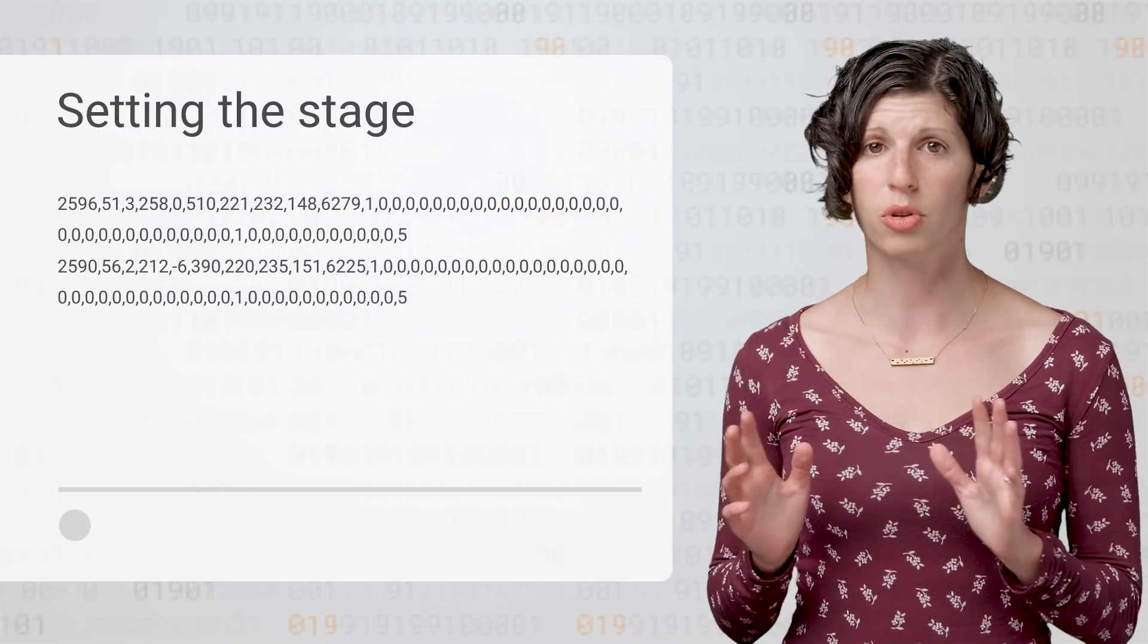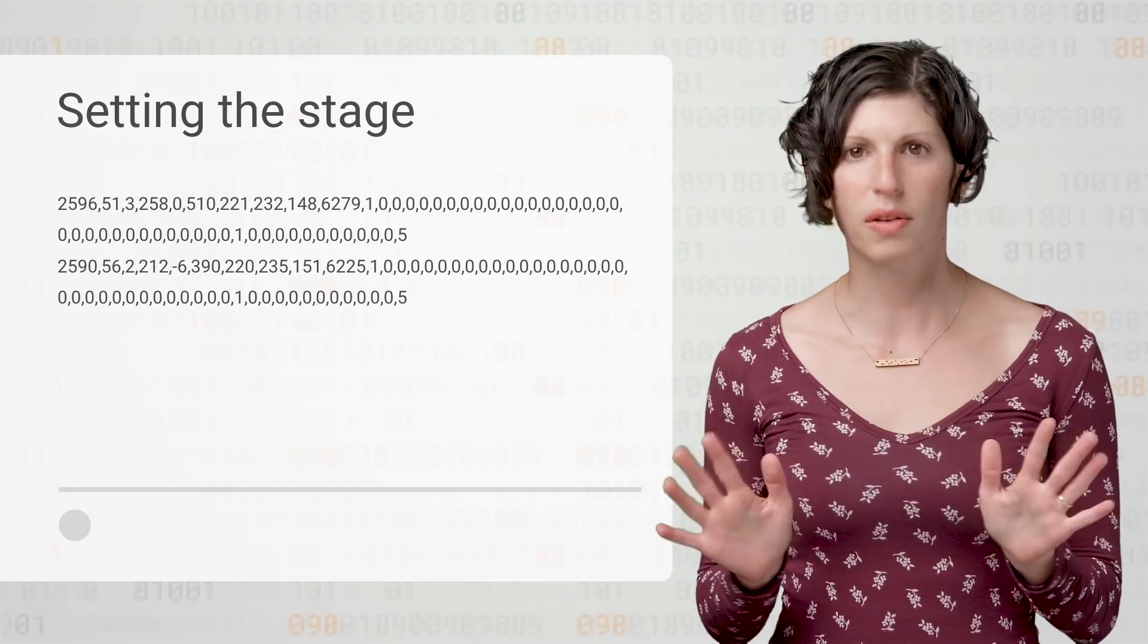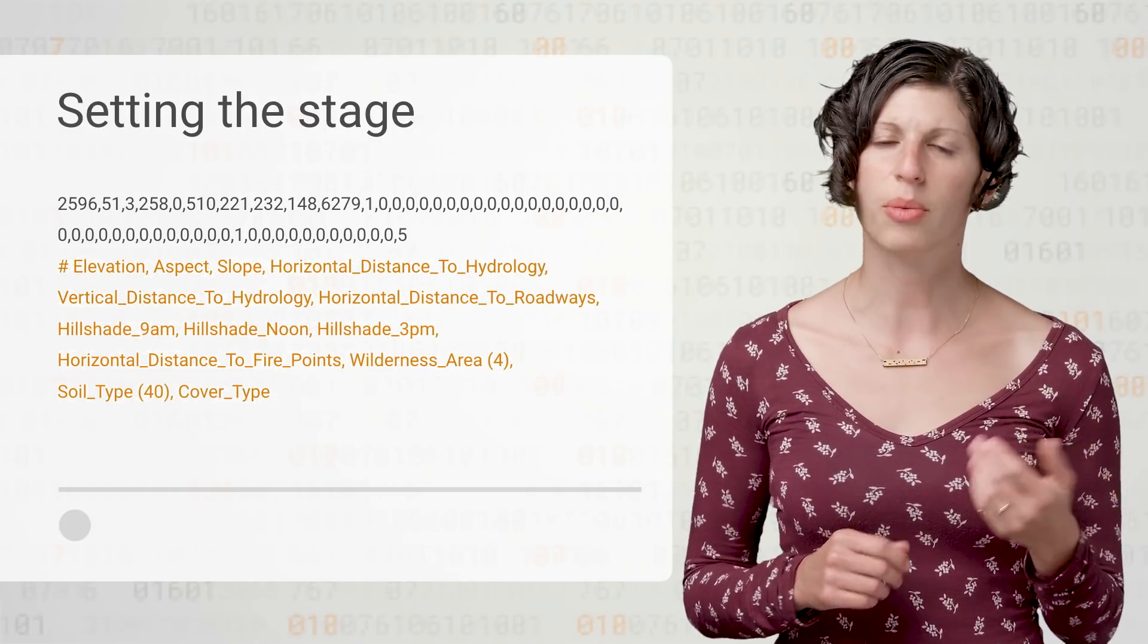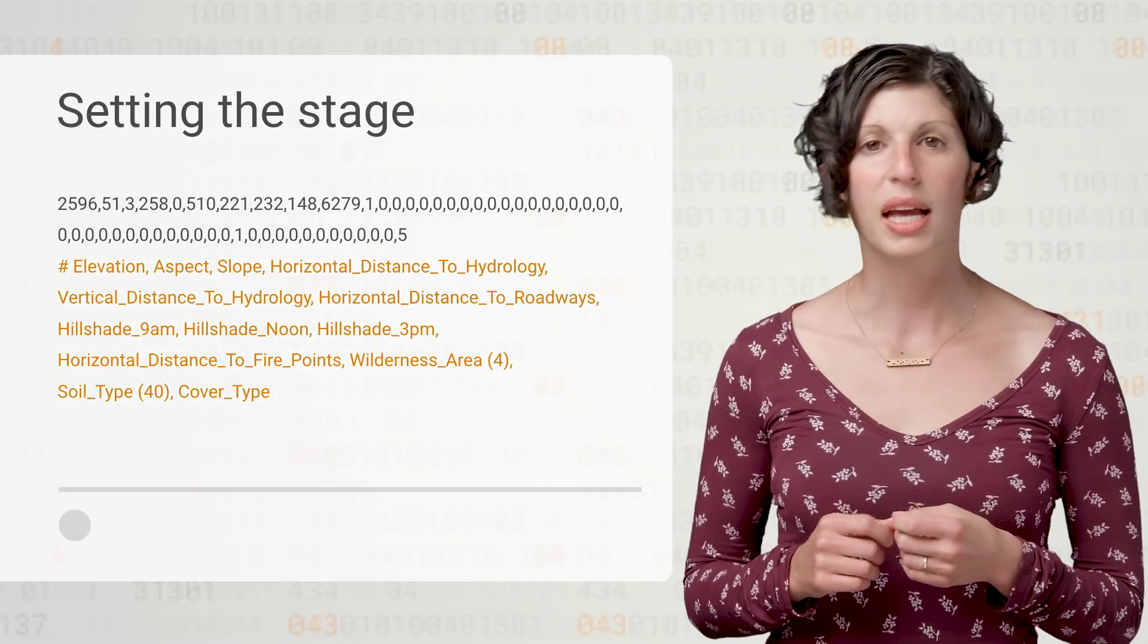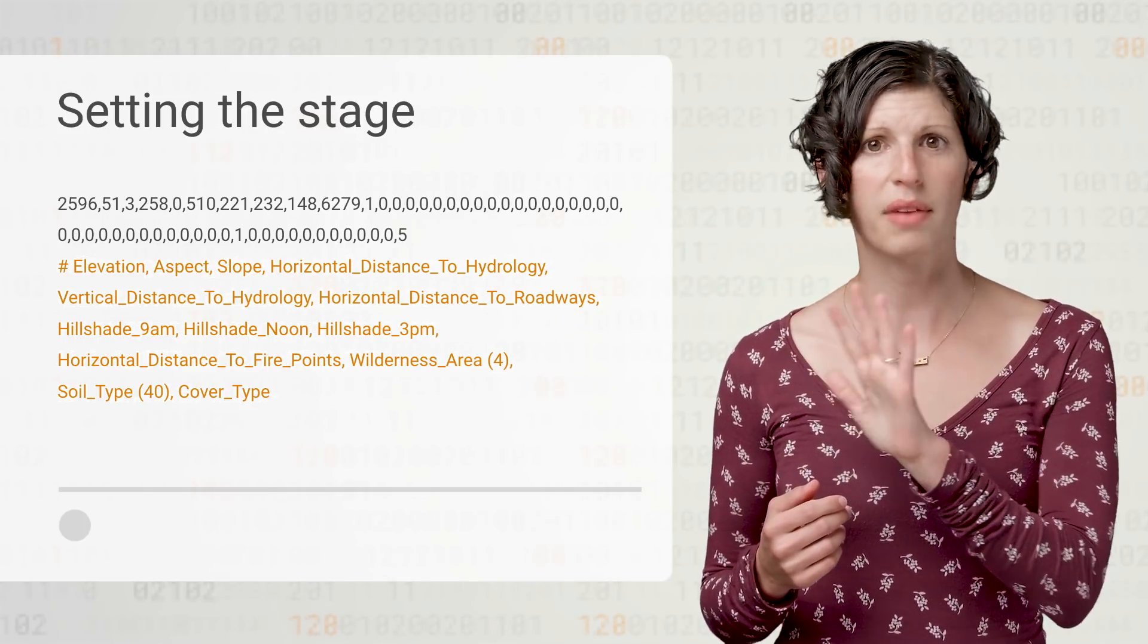If we inspect the first couple rows of our data, this is what we see. Integers, no header, so we have to work from the info file. OK, so here we can see that we have some of our real values. And it looks like some of the categorical values are one-hot encoded. And some are just categories. Some features span multiple cells, so we'll have to handle that.